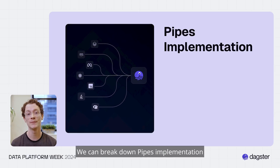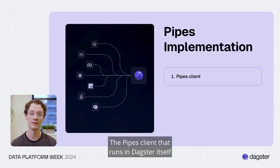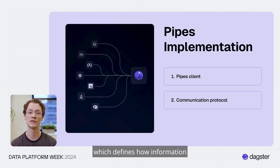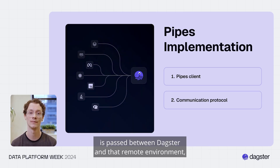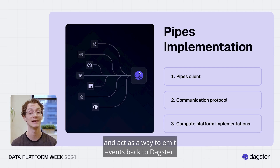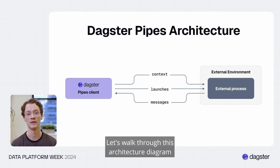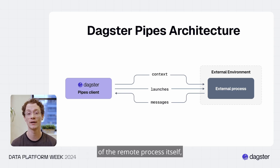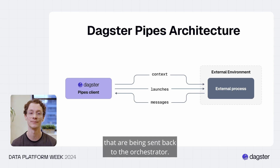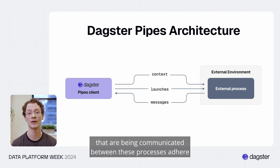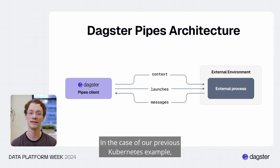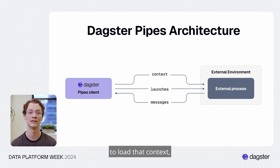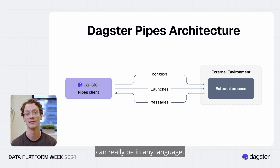So how does this work? We can break down the Pipes implementation into three components: the Pipes client that runs in Dagster itself, responsible for handling the remote process — for example, launching a pod in Kubernetes or starting a Databricks job; the communication protocol, which defines how information is passed between Dagster and the remote environment; and the implementation embedded in the remote process to parse the context and emit events back to Dagster. The orchestration process provides context as a payload, handles creation and deletion of the remote process, and reads messages sent back — all adhering to the Pipes communication protocol.